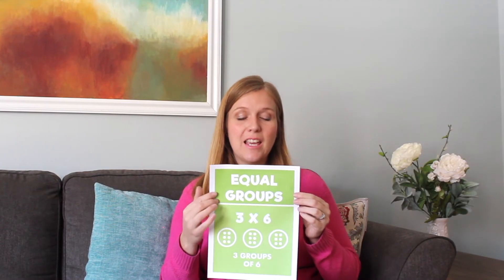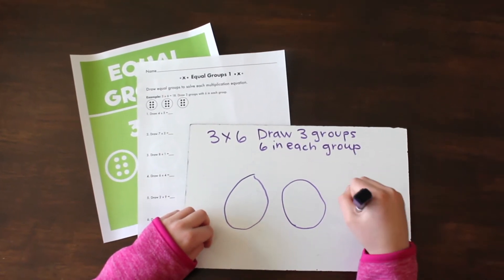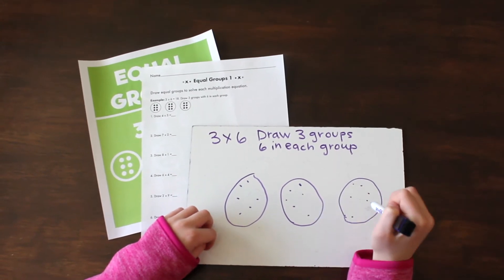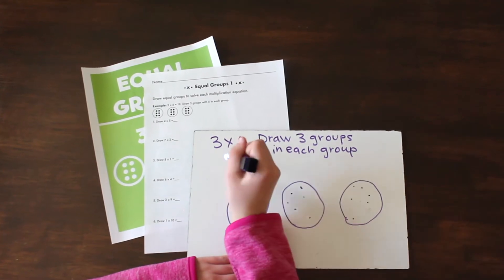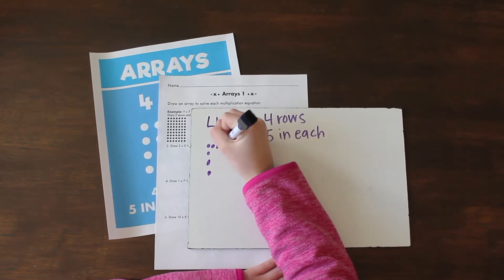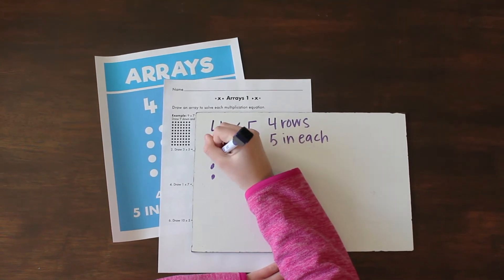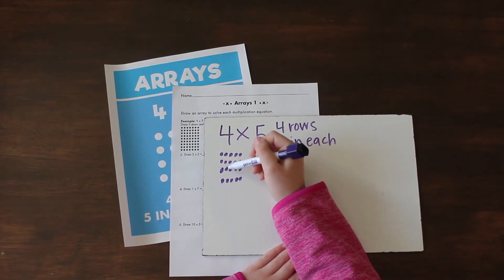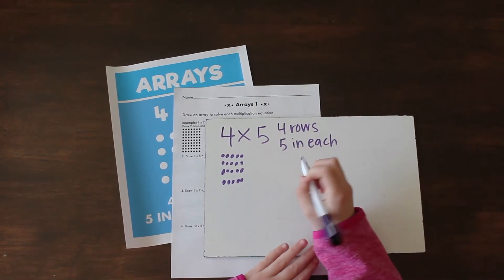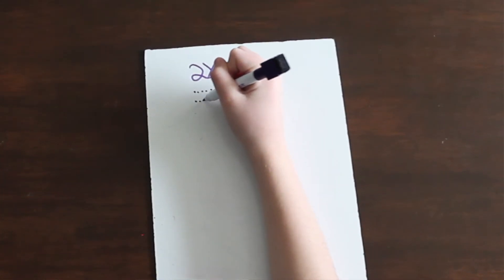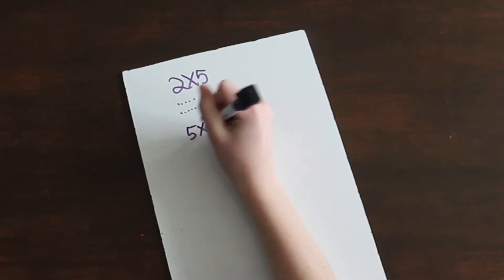Another way to show multiplication is equal groups. A lot of students really like this way of visually showing it, and it also helps with division. So on this example we have three groups with six in each. Another way we can show multiplication is arrays. Arrays are really great — we use these a ton. They can also lead into showing the distributive property. Basically, four times five means I have four rows and there are five objects in each row. You draw dots four going down and five going over, then count them up. Once students learn to create an array, it's really easy to teach the commutative property — two times five turned the other way is the same as five times two.